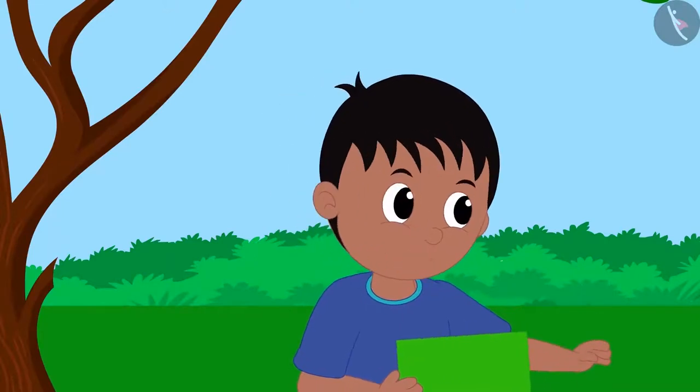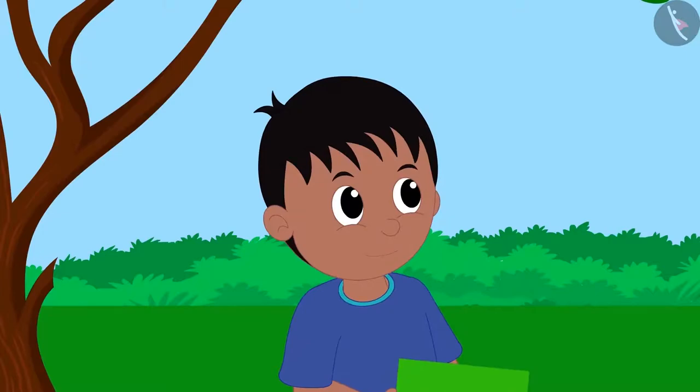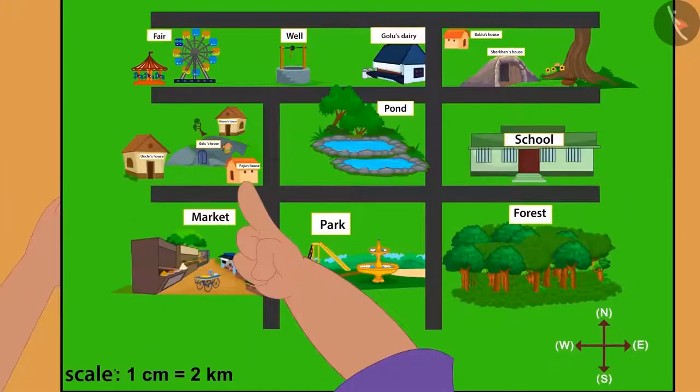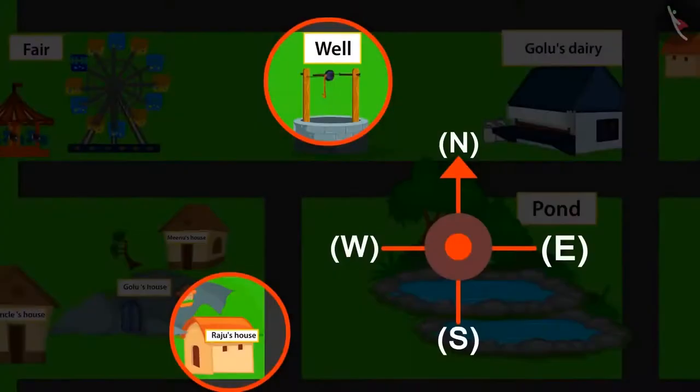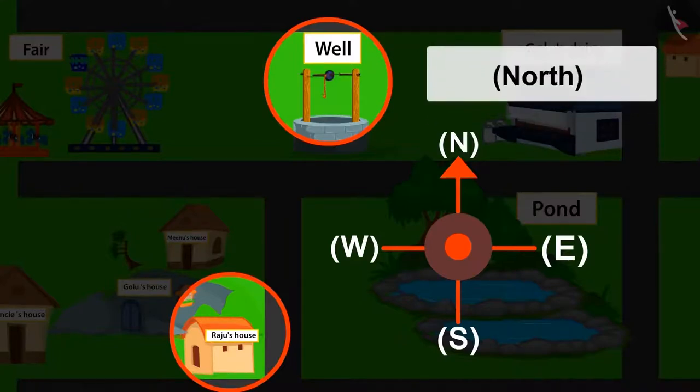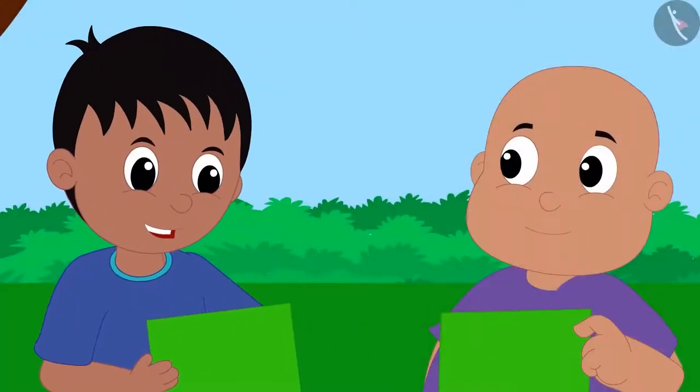Now tell me, the well is towards which direction from my home? This is your home and this is the well. The well is above your home on the map, which means, according to the compass, the well is towards north from your house. Bablu's answer is absolutely right.